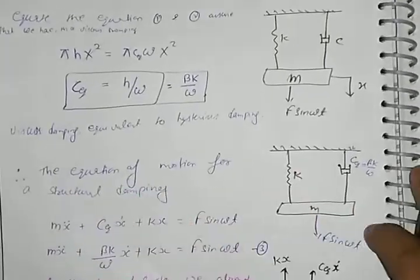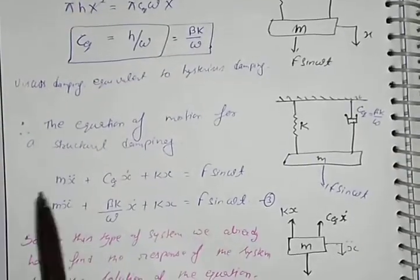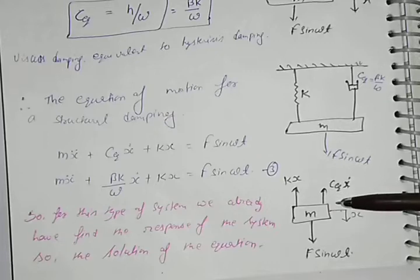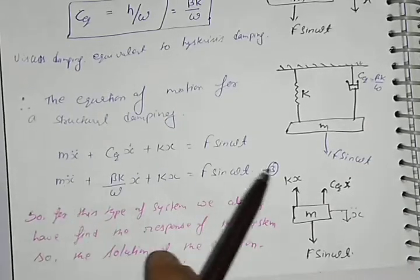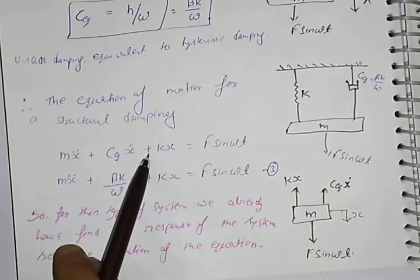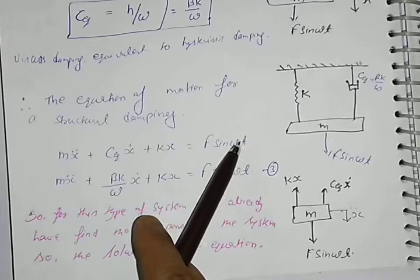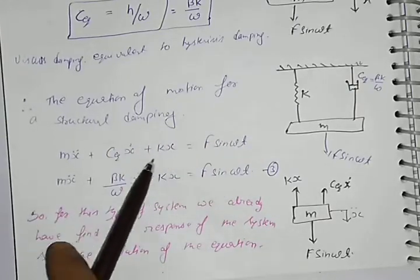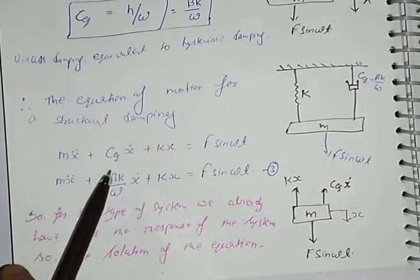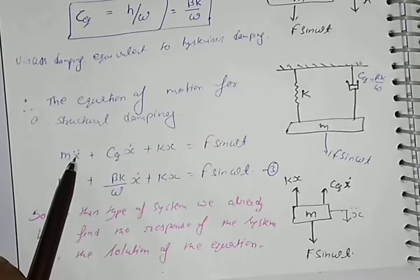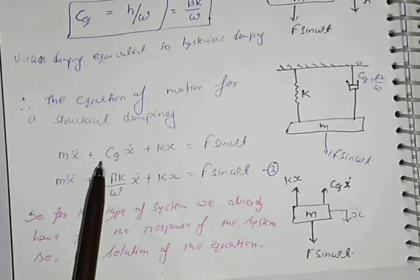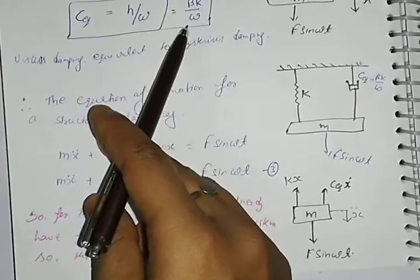This is the conversion from structural damping to equivalent viscous damping. The equation of motion for structural damping from this free body diagram is: mẍ + c_equivalent·ẋ + kx = F·sin(ωt). This shows forced vibration because the sum of forces is not zero — a continuous external force acts on the system. The value of c_equivalent is also equal to βk/ω.